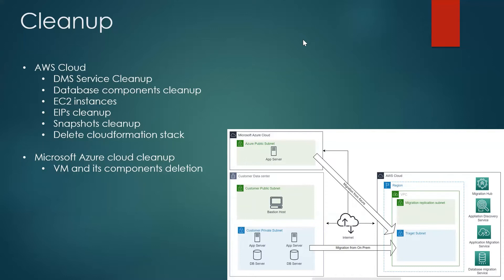In AWS, remember to clean up the Data Migration Service, database cleanup, and the database components that we created, EC2 instances, and elastic IPs — release those elastic IPs, and delete any snapshots that were created. In the end, you can delete the CloudFormation stack that we created to deploy this architecture. That covers AWS cleanup.